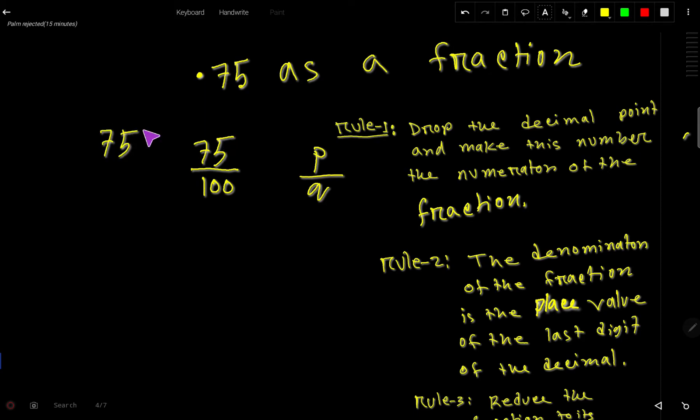Here's another way: just drop the decimal point and write the number you are getting—that will be the numerator. For the denominator, consider one for the decimal point, then for every digit you have, write zero. We have two digits, so two zeros.